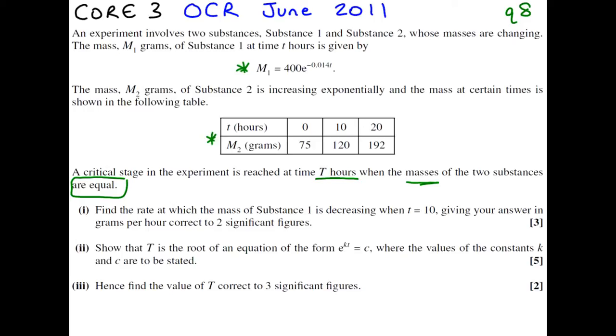Find the rate at which the mass of substance 1 is decreasing when t equals 10. Give your answer in grams per hour, correct to two significant figures.